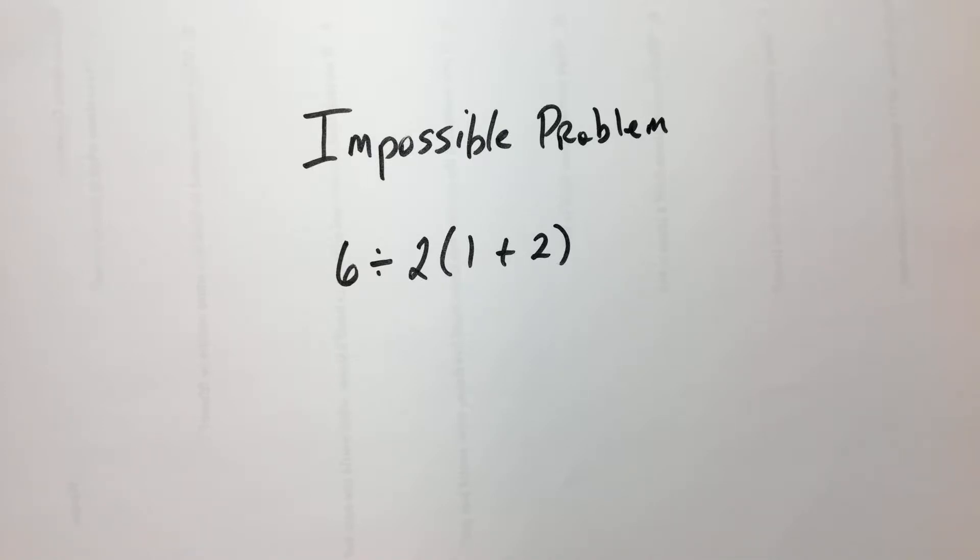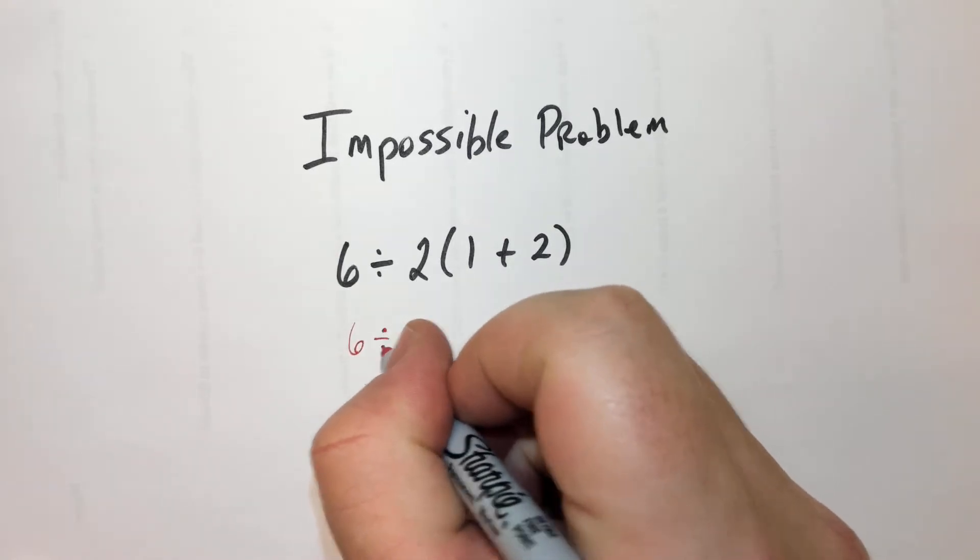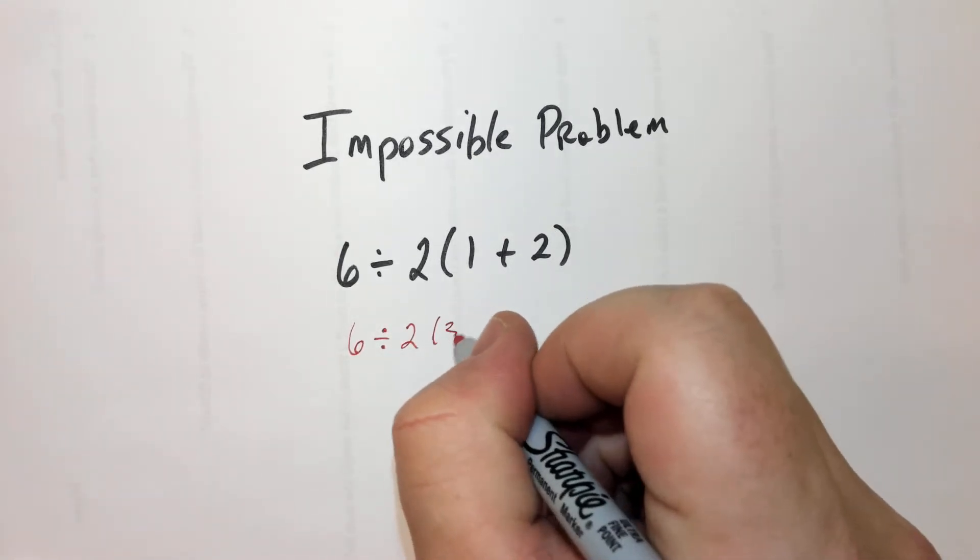So then, 1 plus 2, this is 3. So we've got 6 divided by 2 times 3, right?